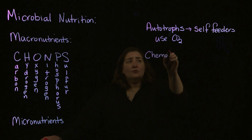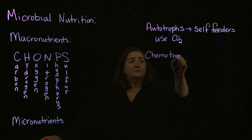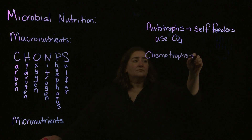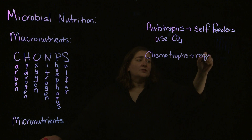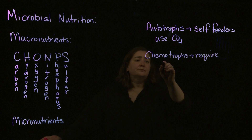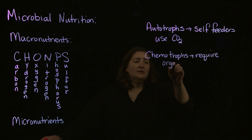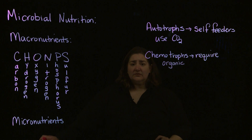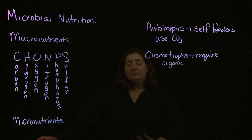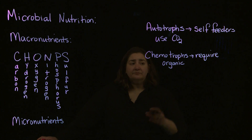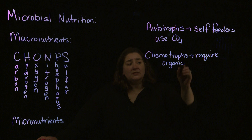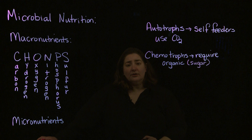The chemotrophs are the ones that are going to require something organic. Most often when we're talking about cellular respiration and generating ATP, that organic substance that's needed is going to be sugar.